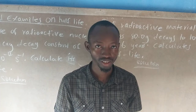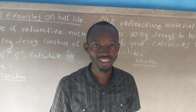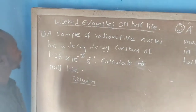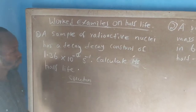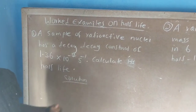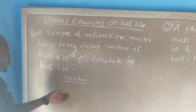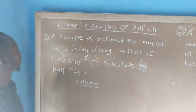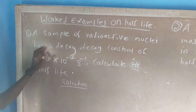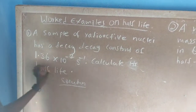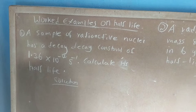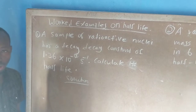Greetings all. Here again I'm going to give you some worked problems on half life. The question reads: a sample of radioactive nuclei has a decay constant of 1.36 times 10 to the power minus 4 per second. Calculate its half life. You just have to know the formulas to use.